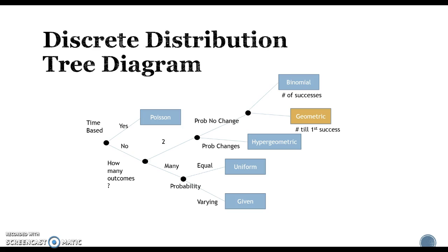Geometric is also a similar concept, but it's asking a different kind of question. So not time-based, still two choices, two outcomes. The probability does not change, so there is replacement. But here we were looking at number of successes. Here we're looking at numbers of attempts until the first success.